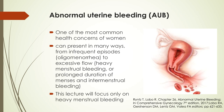So what is Abnormal Uterine Bleeding? It's actually one of the most common health concerns of women nowadays. It can present in many ways, from infrequent episodes to excessive flow, which is what we call heavy menstrual bleeding. But in this lecture, we will focus only on heavy menstrual bleeding.